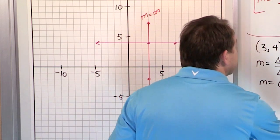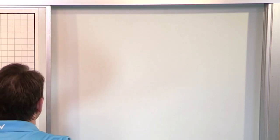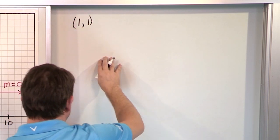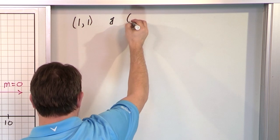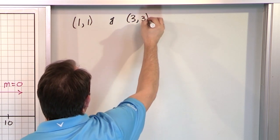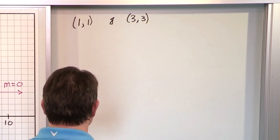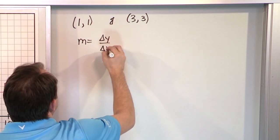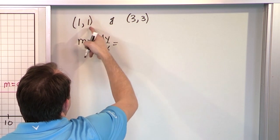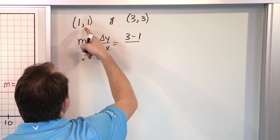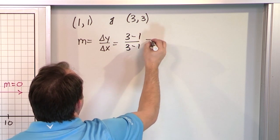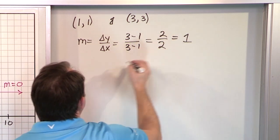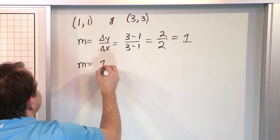One more example. The points are (1, 1) and (3, 3). The slope is delta y over delta x: 3 minus 1 on top, 3 minus 1 on the bottom. Top is 2, bottom is 2. 2 divided by 2 equals 1. The slope equals 1.